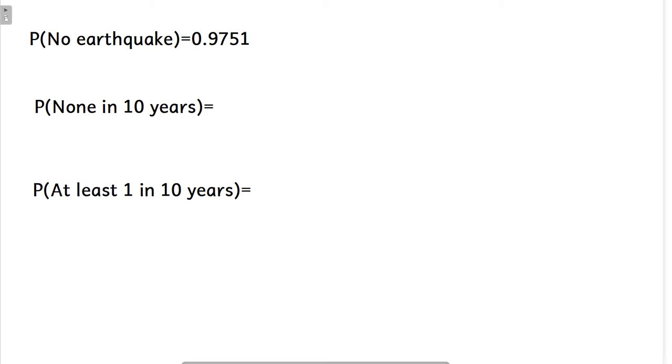So the probability of no earthquake is one minus the probability that there is one, but that's just one year. So the probability that there's none in 10 years is simply that probability, 0.9751 raised to the 10th power. I don't expect you to do that. Let's just put it into the calculator and that is going to be 0.7771.